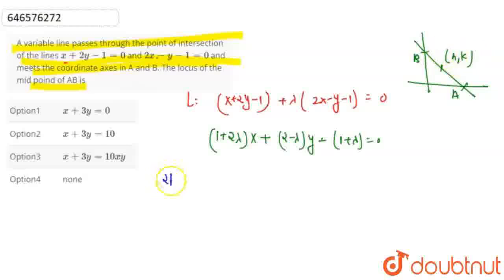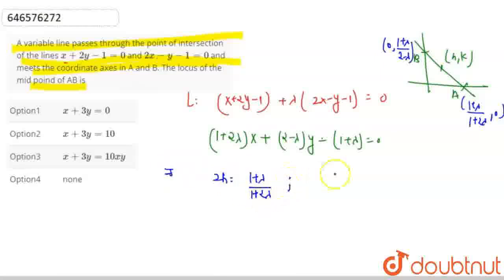Point A will be 1 plus lambda upon 1 plus 2 lambda, and we have 0 comma 1 plus lambda upon 2 minus lambda. So basically the two points are: 2h equals 1 plus lambda upon 1 plus 2 lambda and 2k equals 1 plus lambda upon 2 minus lambda.